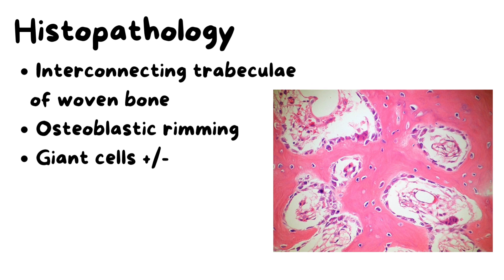Looking at histopathology, there are interconnecting trabeculae of woven bone, which is the pathological bone. Around the foci of tumor, we can see osteoblastic rimming — a single layer of osteoblasts around the foci of tumor. Sometimes we can also see giant cells in osteoblastoma, though they may not always be present.